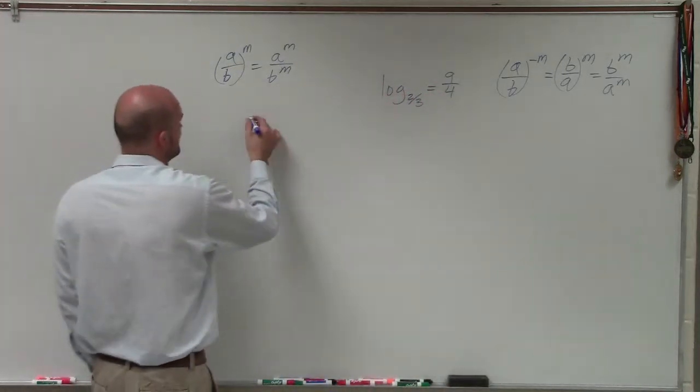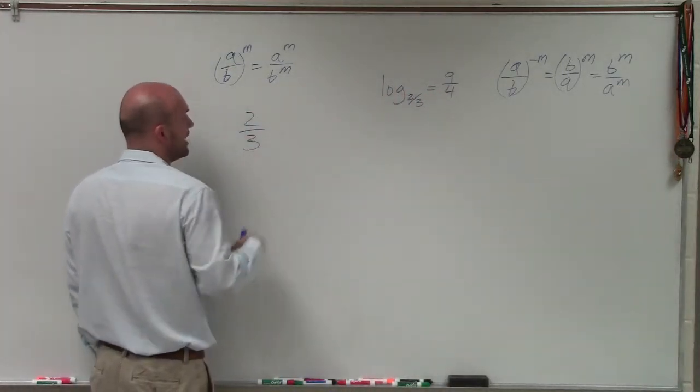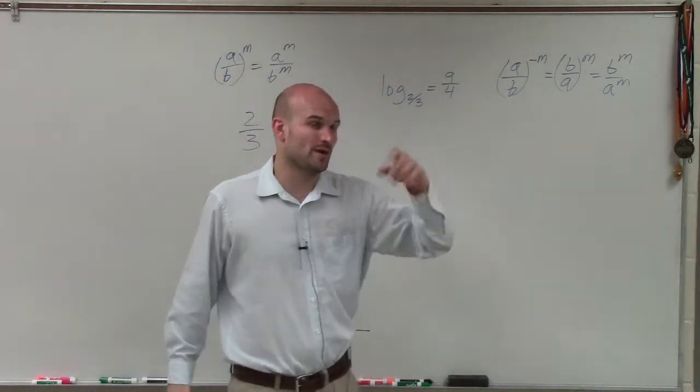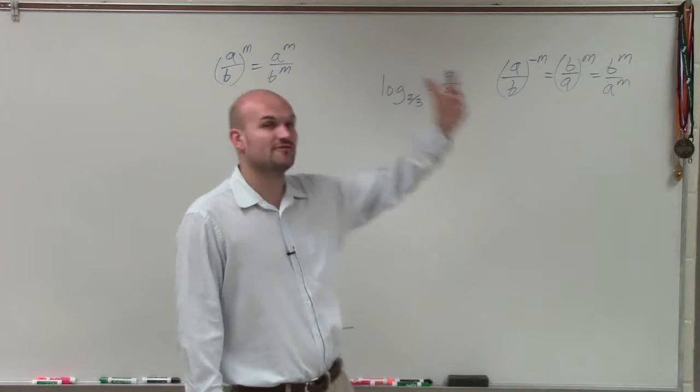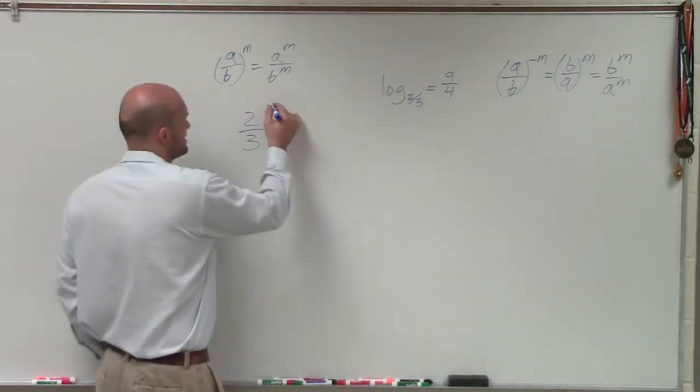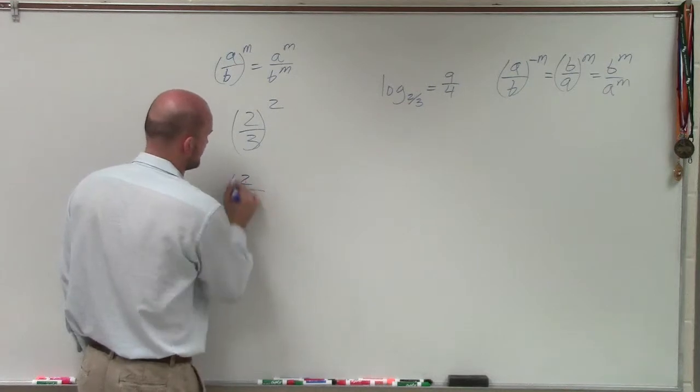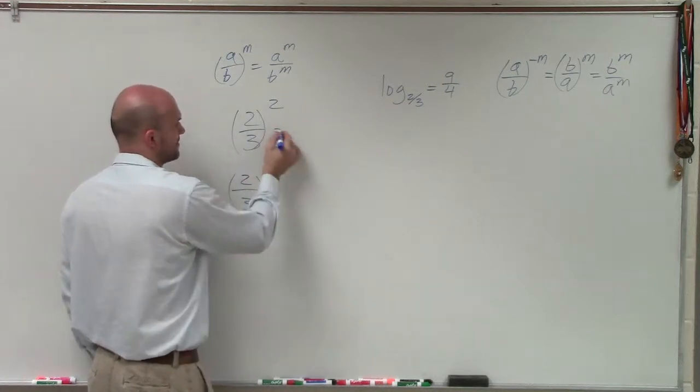That's going to become very important, because when I start looking at this as 2/3, I'm going to start raising it to a power. Now, obviously, 2/3 raised to the 0 power is just going to give me 1. 2/3 raised to the first power is just going to give me 2/3. So let's start at 2/3 squared and 2/3 cubed. See if that's going to get us anywhere.